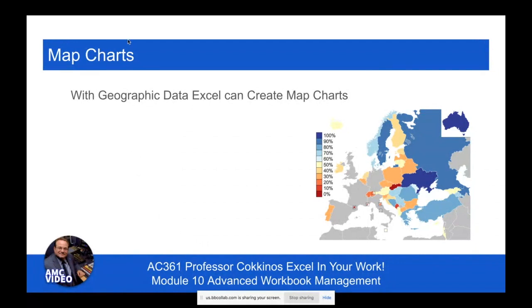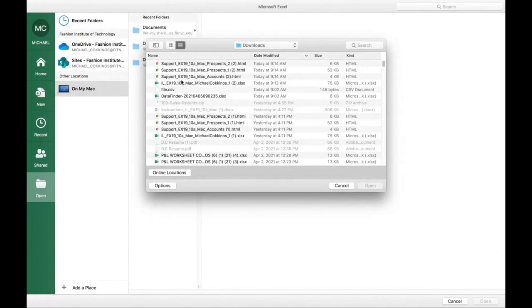One clarification: a data map in the training is not a geographical map. A map chart is the geographical map. A data map is simply a way of describing how data is structured and configured — the way it's set up on a web page, using formats like CSV or XML that define lists and tables. Excel also has a neat geographic map chart feature that I wanted you to see even if it's not in the assigned work.